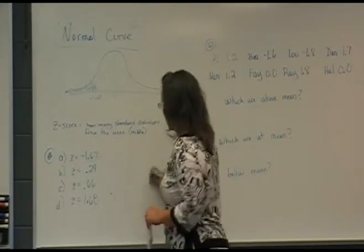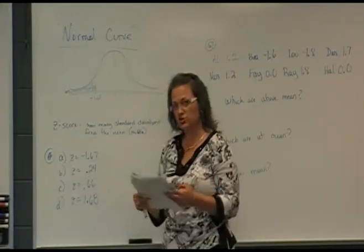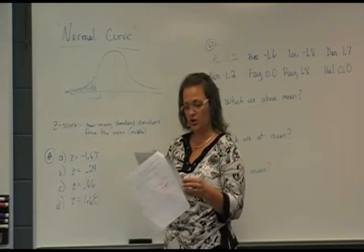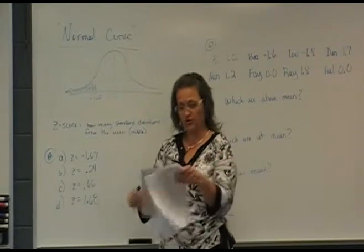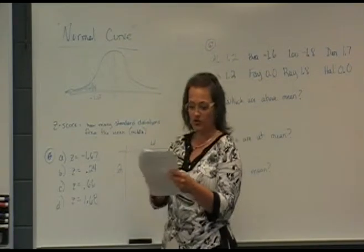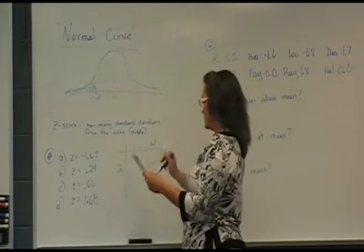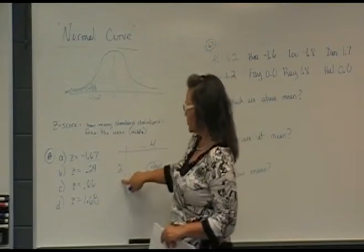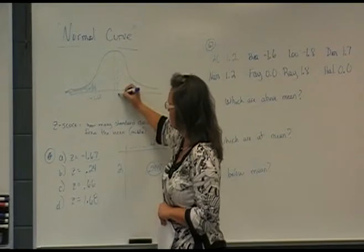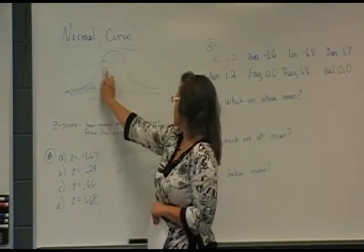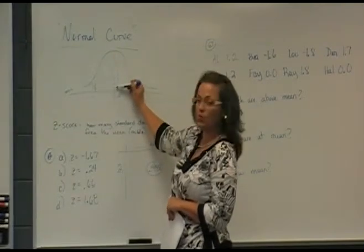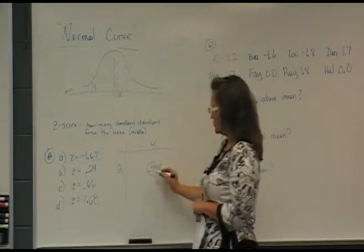Let's look at z equals 0.24. The question is still: determine the area to the left. Look at 0.24 on your chart — remember, you'll only find the 0.2 part down the column, then tab over for the 4. This one is positive, so make sure you're in the positive part of the chart. Find 0.2 and move over to where it says 4, so 0.24. That spot in the chart shows 0.5948. Since 0.24 is just a little past zero — just past the mean — the area to the left should be more than 50%. From zero on over it's 50%, and we're a little more to the right of that, so 59.48% seems reasonable.